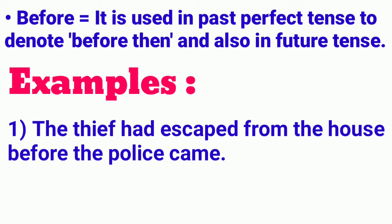The first example: the thief had escaped from the house before the police came. As you can see, this is a past perfect tense sentence, and here before is used to denote before then — that means before that past situation. The thief had escaped from the house before the police came.